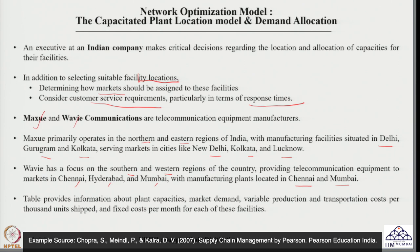Additional information includes the capacities of the plants, market demands, and the variable cost — which includes both production and transportation cost per thousand units shipped. The fixed cost per month for each facility is also considered. We already had a discussion about fixed cost in our previous sessions.